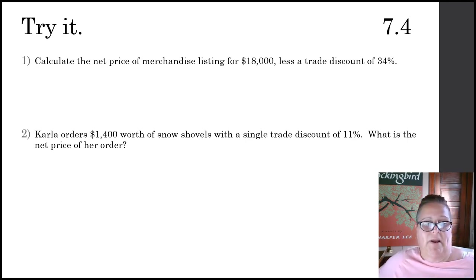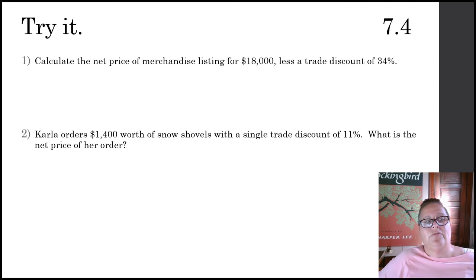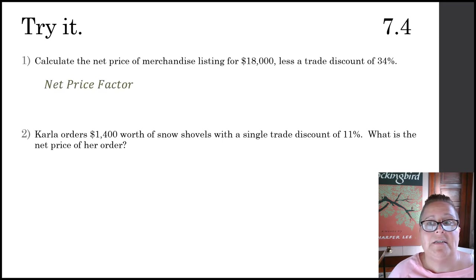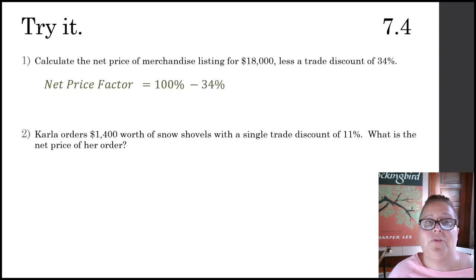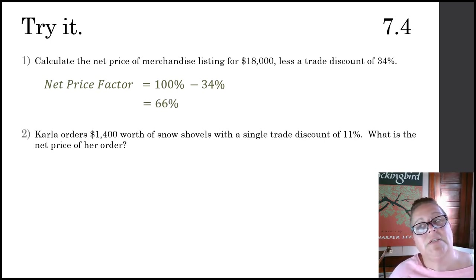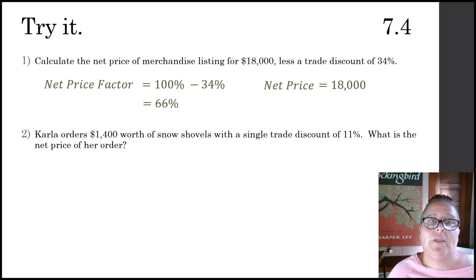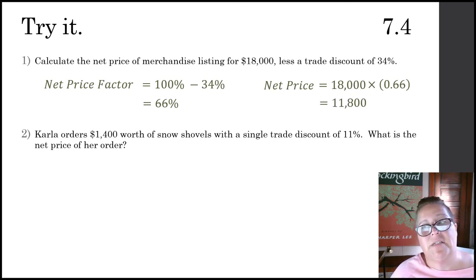Let's try a couple of problems. We want to calculate the net price of merchandise listing for $18,000, less a trade discount of 34%. Since we've been asked for the net price, I'm going to use the net price factor. To find the net price factor, I take 100% minus the 34% trade discount, leaving me with 66%. The net price is found by taking the list price of $18,000 and multiplying it by the net price factor of 0.66. This gives us a net price of $11,880.